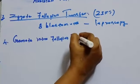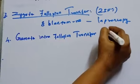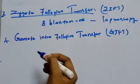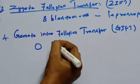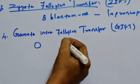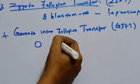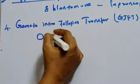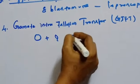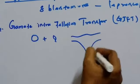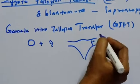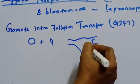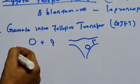The fourth method is gamete intra-fallopian transfer, or GIFT. In this method, ovum is collected from the donor and introduced into the fallopian tube. The eggs are collected from the ovaries and placed along with sperms into one of the fallopian tubes, where fertilization takes place. The zygote then automatically travels and re-implants in the uterus.